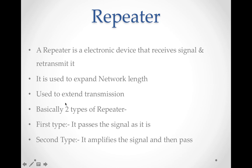Basically the repeater is of two types. In the first type, it passes the signal as it is — matlab jis format mein signal mila hai, same format mein aage pass kar deta hai. In the second type, it amplifies the signal and then passes it. So if there is noise in the signal, the second type of repeater amplifies and improves the signal before passing it. The second type is the best one.